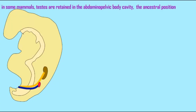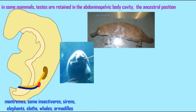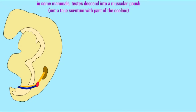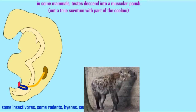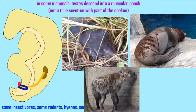This is not the ancestral condition in all mammals, however. Monotremes — the most primitive mammals — including some placental mammals such as some insectivores, sirens, elephants, sloths, whales, and armadillos, retain the testes inside the abdominal-pelvic body cavity, as in the ancestral condition. In some mammals, such as some insectivores, some rodents, hyenas, and seals, the testes descend into a muscular pouch but not a true scrotum, which includes part of the scrotum proper.